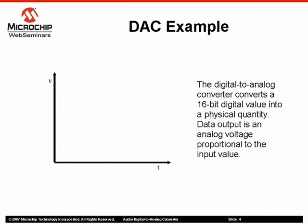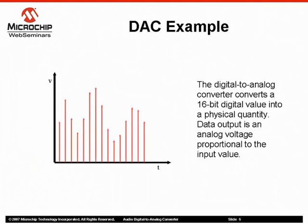Now let's take a look at an ideal DAC operation. The red arrows represent the DAC data input, which is in the form of a 16-bit digital value that varies over a period of time. The blue waveform represents the upsampled data output, which is an analog voltage that is proportional to the input value.